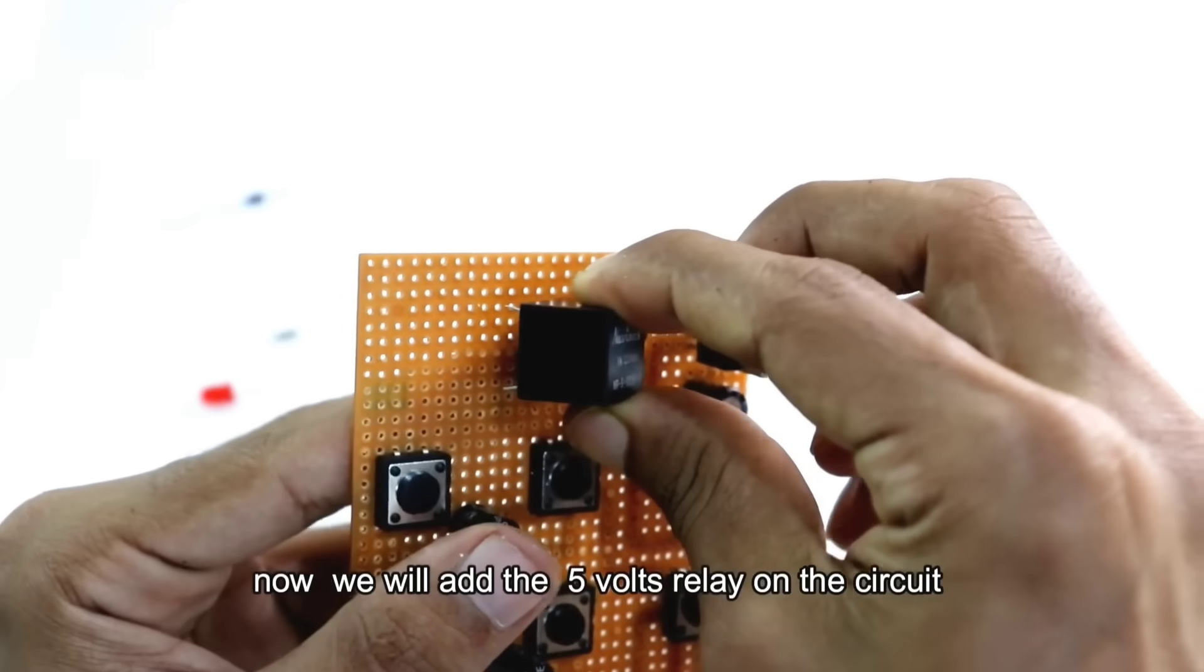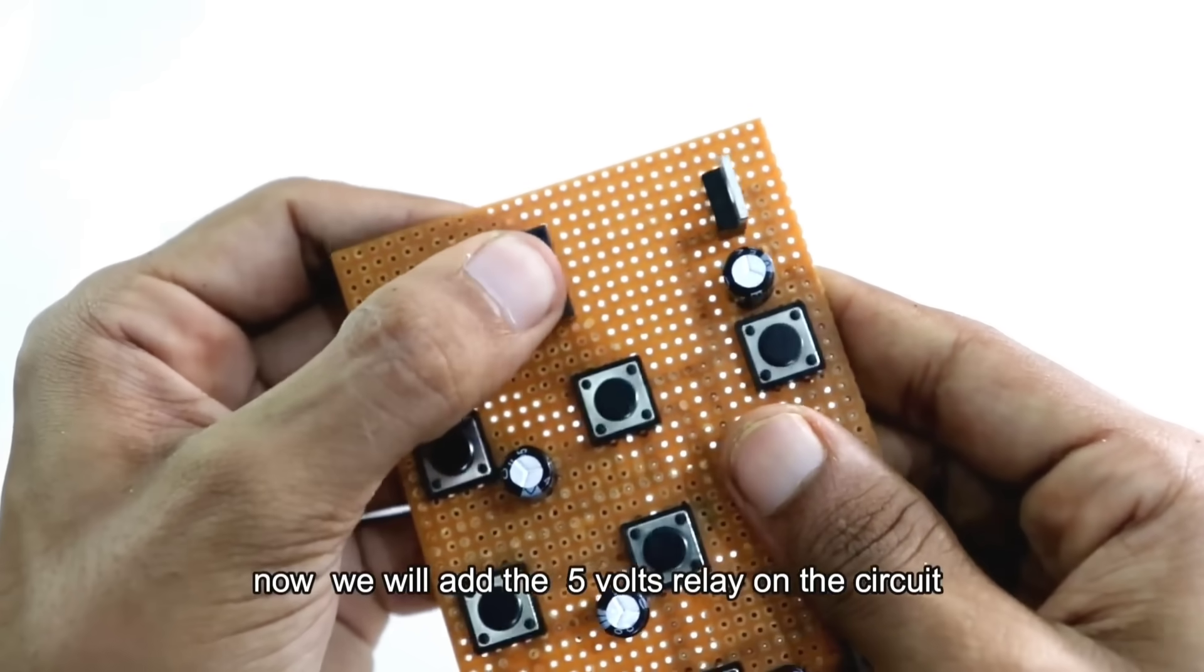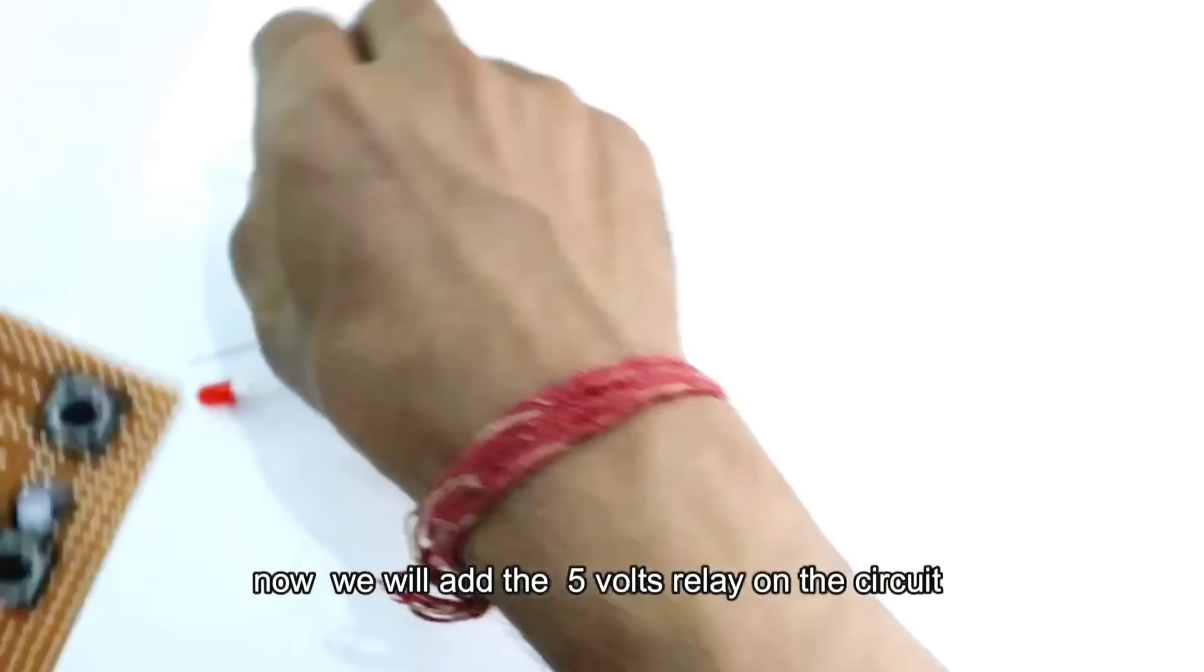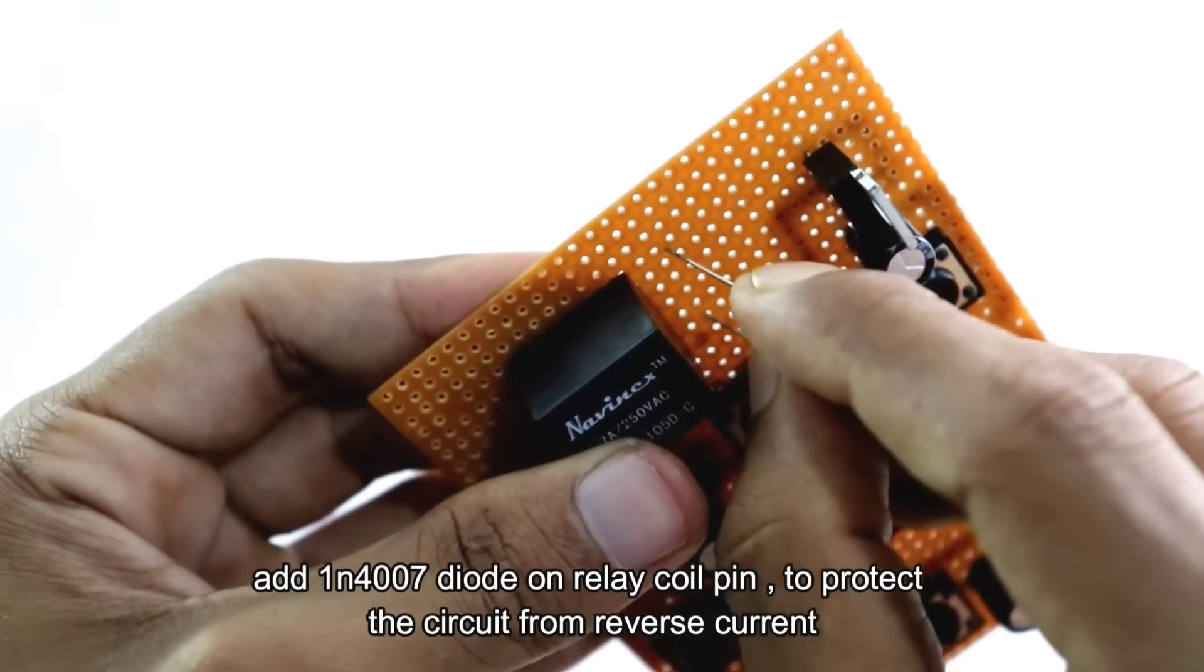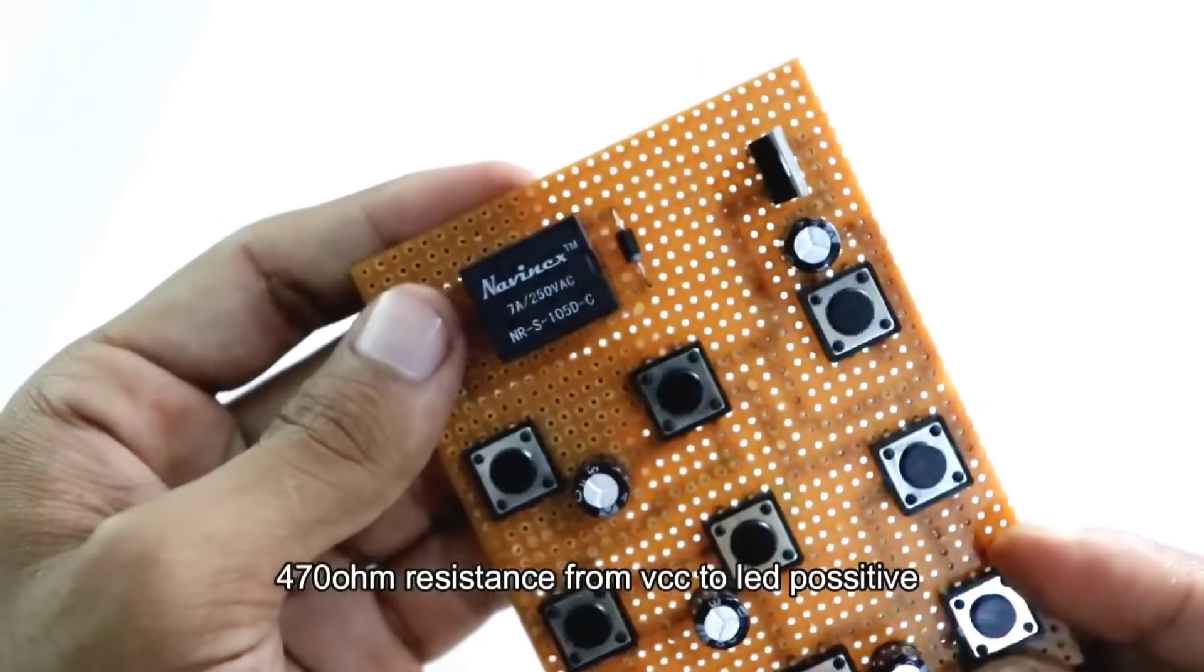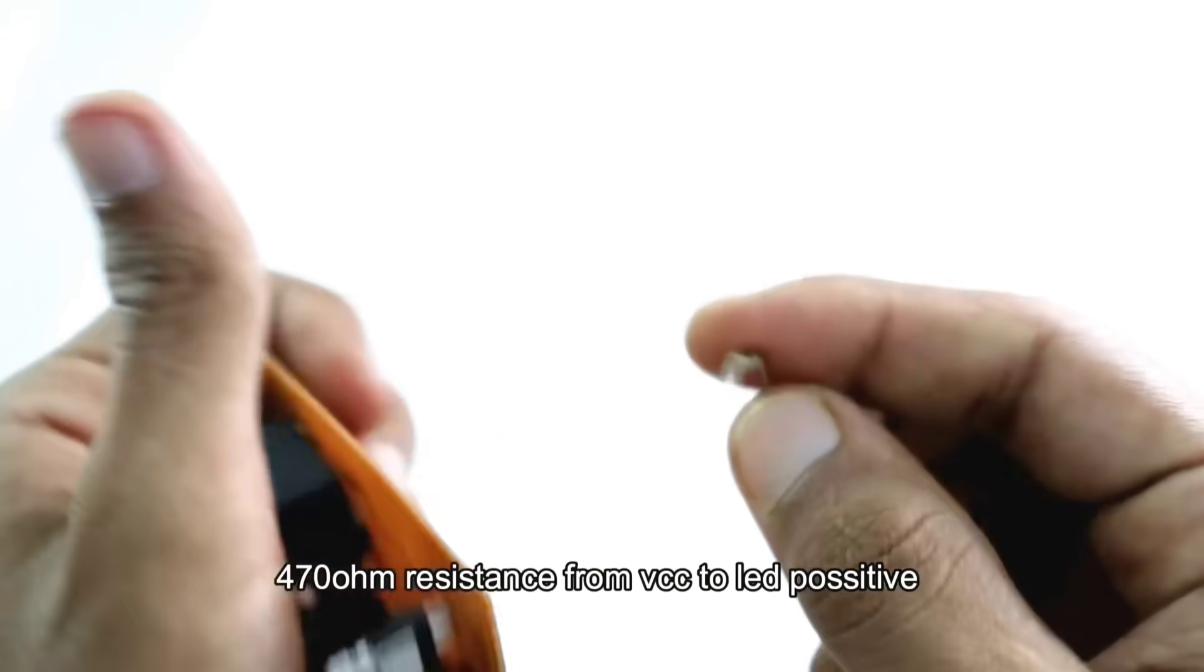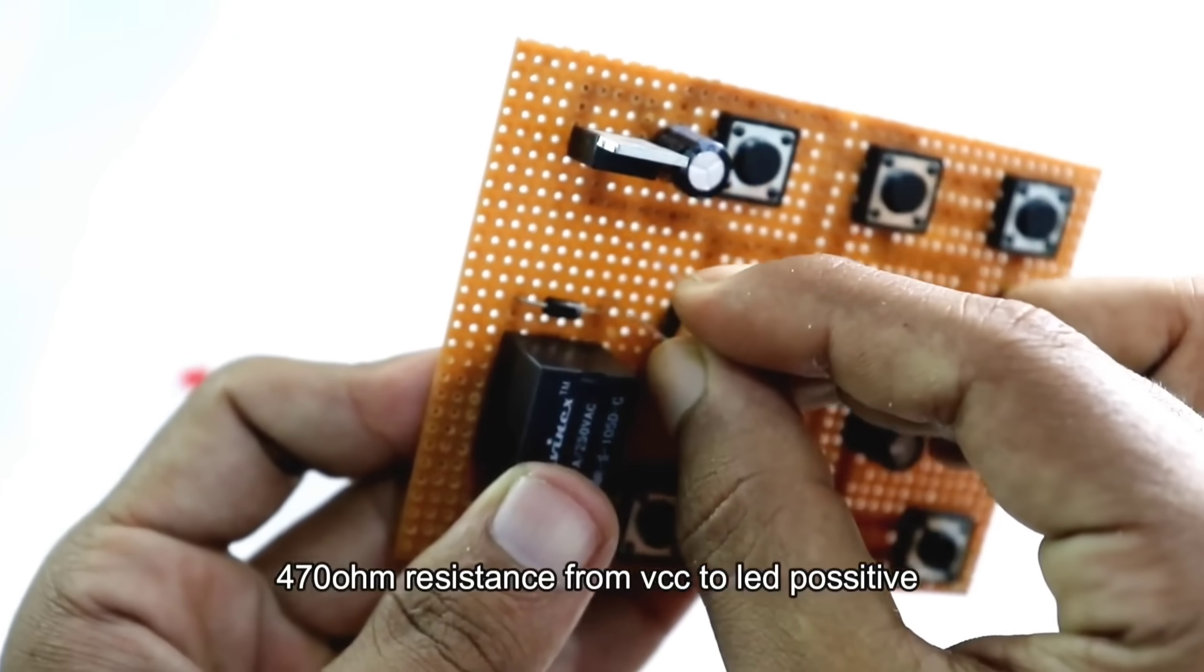Relay installation. After setting up the MOSFET, we now place a 5 volts relay module in the circuit. The relay helps to isolate and control higher voltage devices safely. To prevent reverse current or voltage spikes when the relay switches, we connect a 1N4007 diode across the relay coil terminals. Next, we carefully connect a 470 ohm resistor between the VCC positive supply and the anode positive leg of the LED.